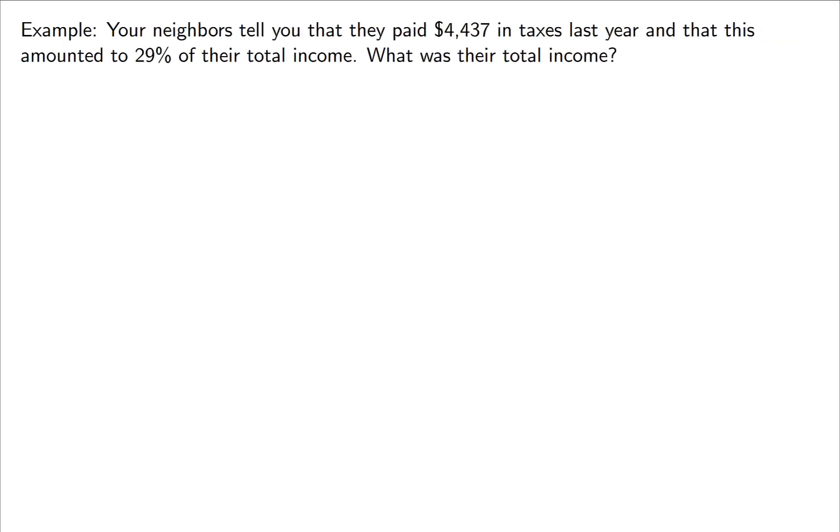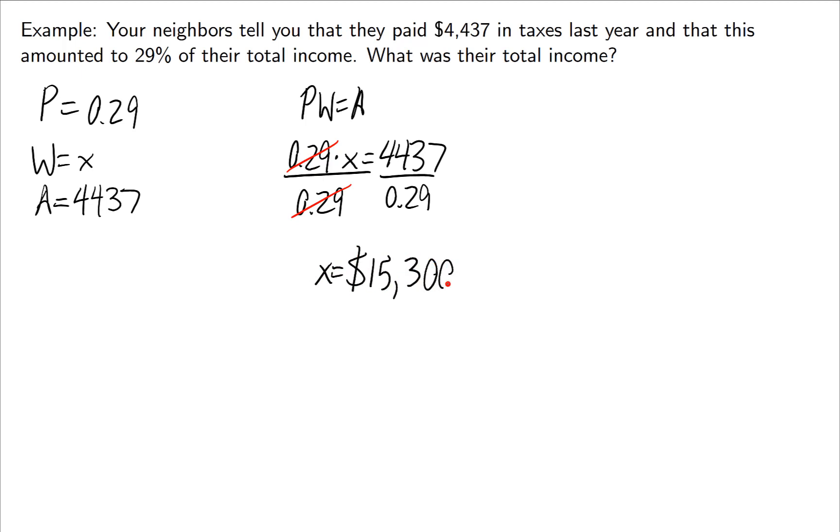Next example. Your neighbors tell you they paid $4,437 in taxes, and that was 29% of their income. We want to know what is their total income. So don't jump onto this one too quickly. If you think about it, their total income is the whole. That's what is our unknown, is the whole. Normally the whole is given to us, but this time we're told the amount and the percent, and we're not told the whole. So if we write it down, our percent is 0.29, our whole is unknown, and our amount is 4,437. In the formula, PW equals A, that looks like 0.29 times your unknown is equal to $4,437. We'll divide by 0.29 in order to get X by itself, and I get that X is equal to $15,300 yearly wages.